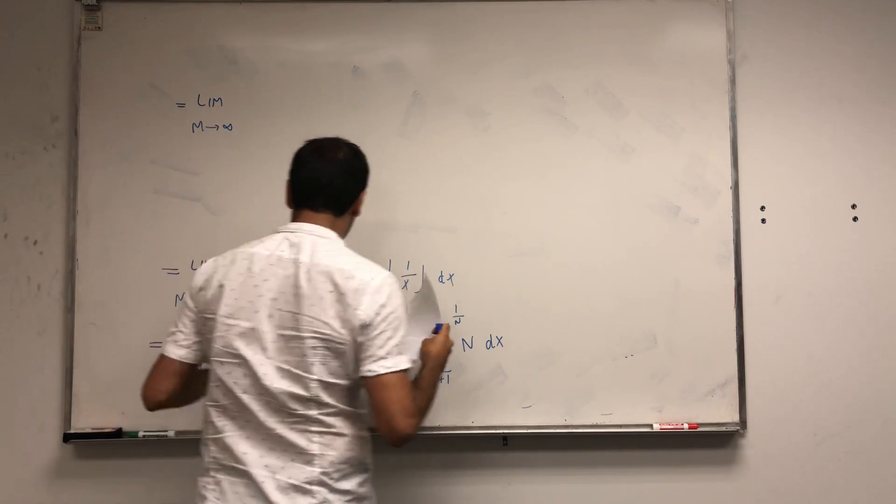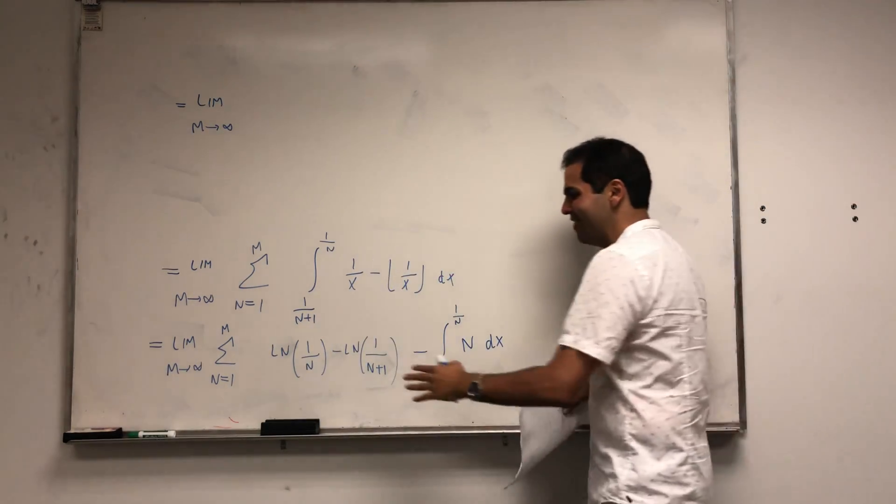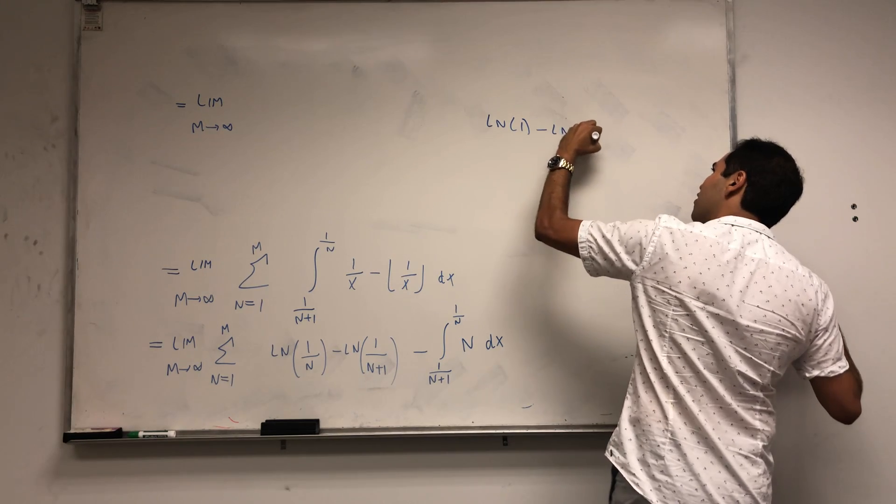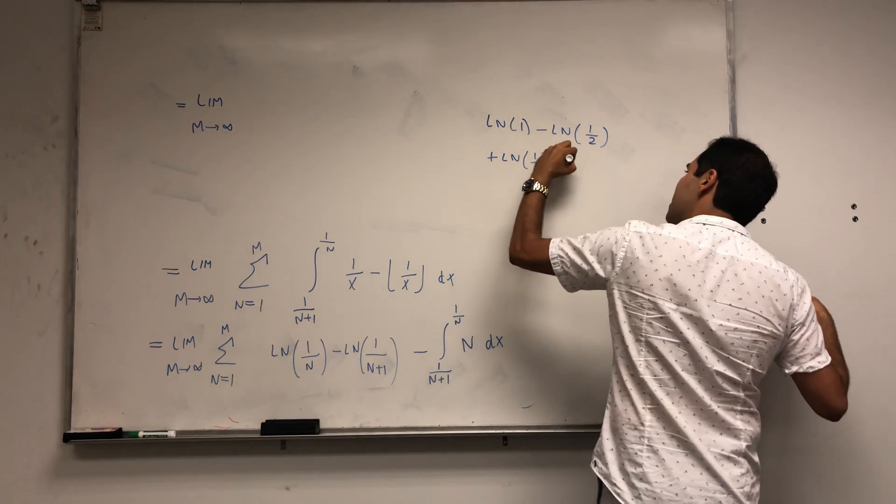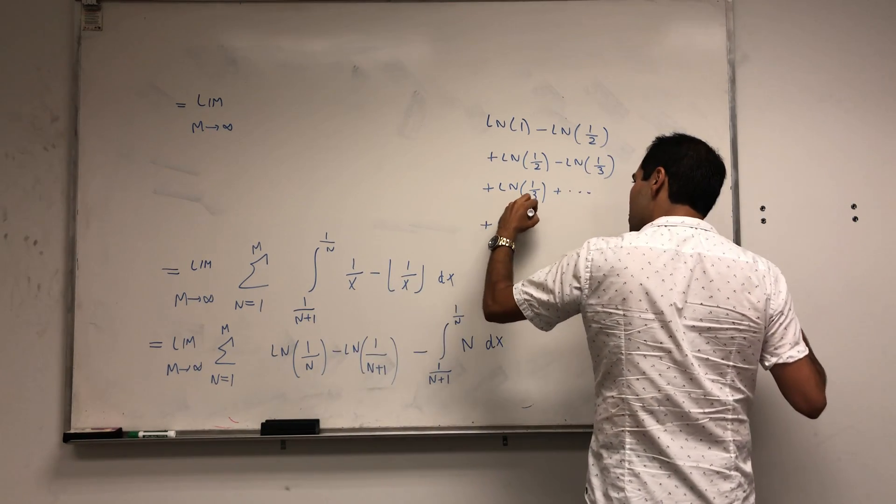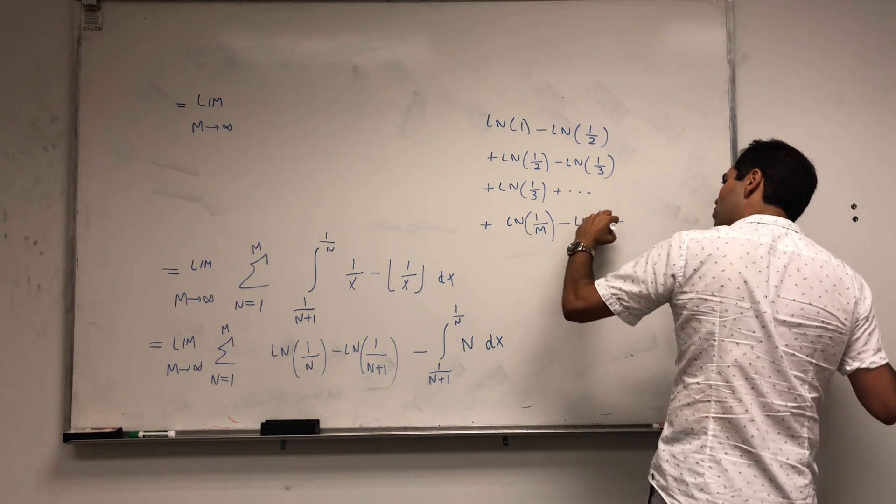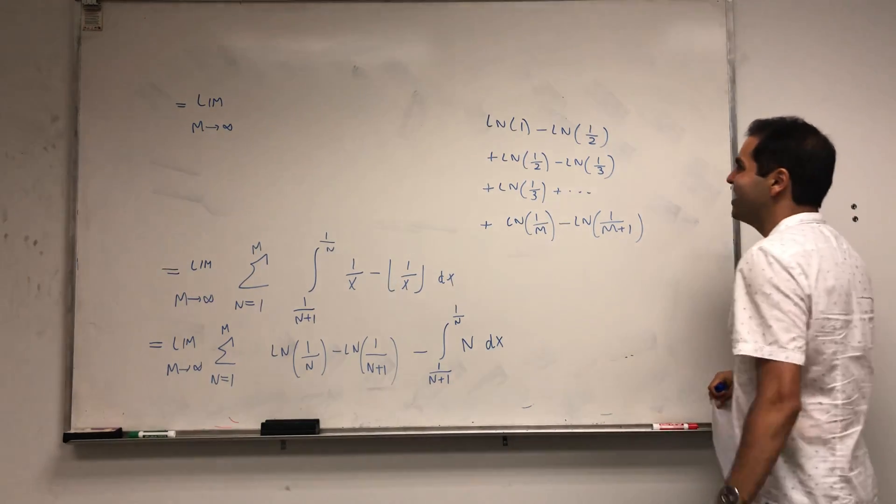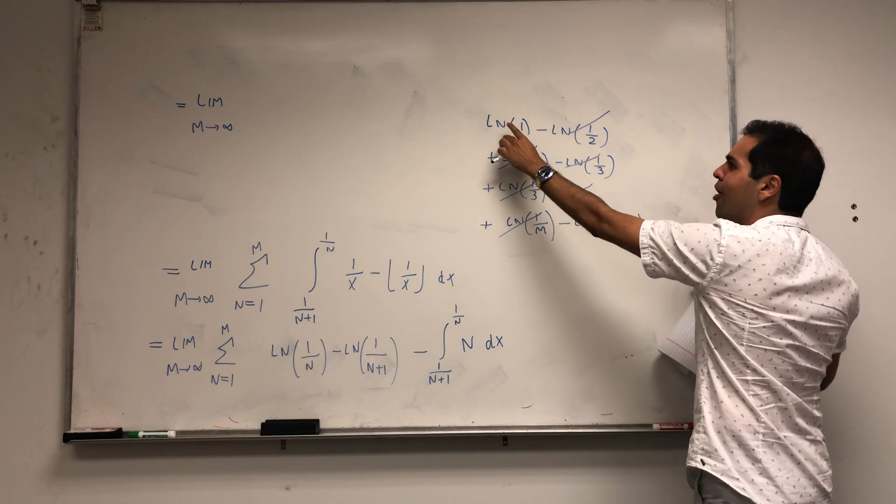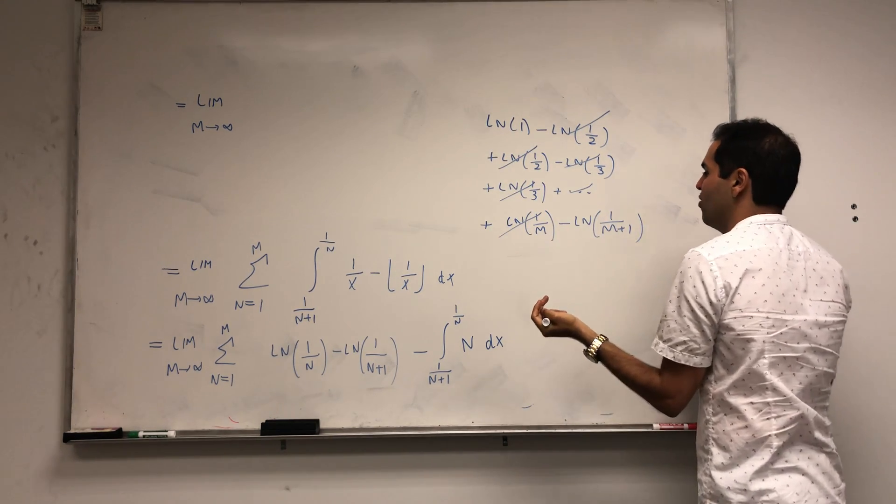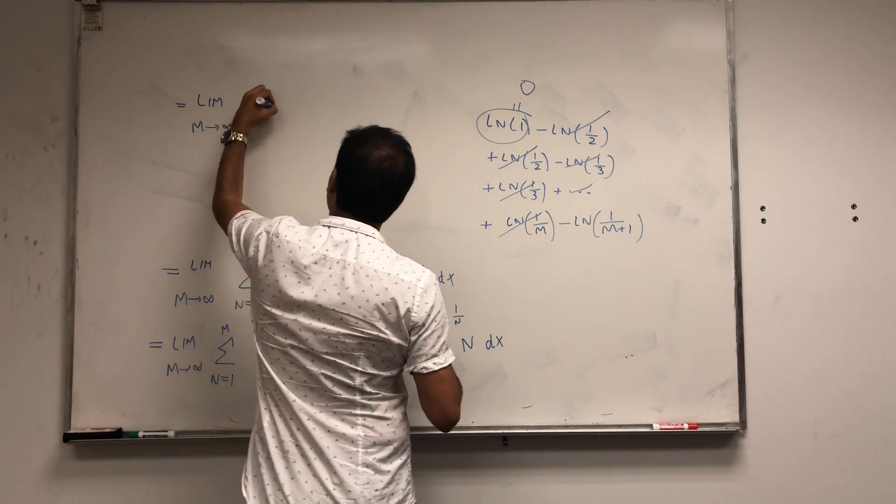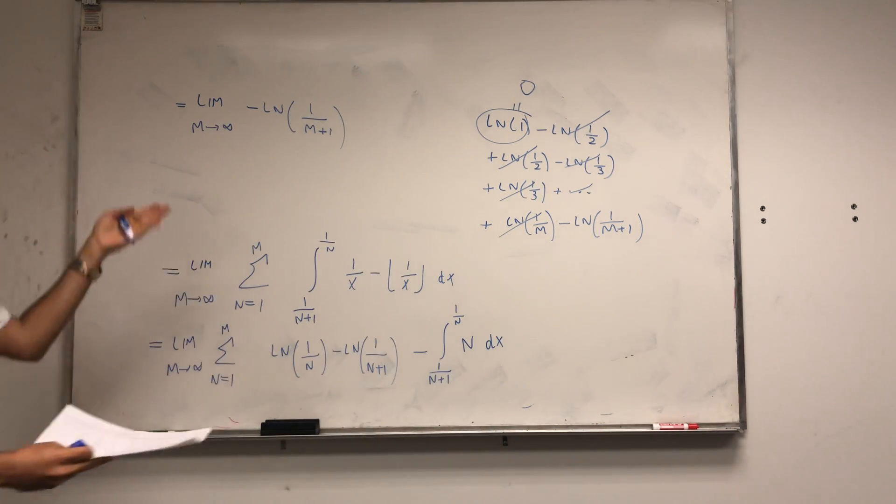And so, let's continue this calculation. So if you actually write down this sum, you get ln of 1 minus ln of 1 half plus ln of 1 half minus ln of 1 third plus ln of 1 third minus blah, blah, blah, all the way to ln of 1 over m minus ln of 1 over m plus 1. Notice this is a calculus dream, you have a telescoping series. And once you have this telescoping sum, all you're left with is just the beginning and the end, ln of 1 minus ln of 1 over m plus 1. But ln of 1 is 0. So in the end, you're just left with minus ln of 1 over m plus 1.